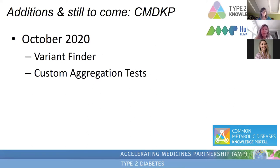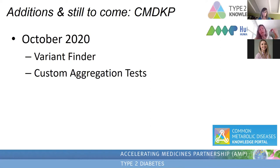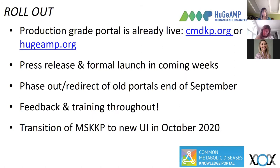There are two things you may be used to seeing in the old framework that are not yet on the portal. One is the variant finder, which allows you to select your favorite dataset and a set of filters based on phenotypes and p-value thresholds — that's coming online in October. Also, custom aggregation tests: if you're used to using our burden or GATE tool, that's not currently on the new CMDKP. We're rebuilding that and adding exciting features including the ability to do non-coding aggregation tests with datasets like TOPMed.